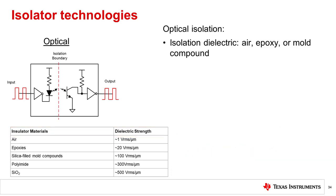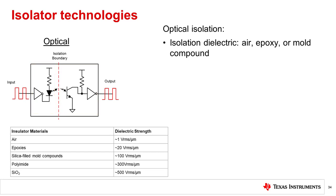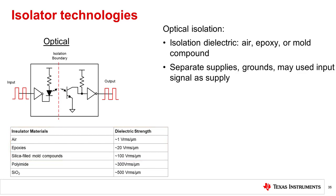An optical isolator, or optocoupler, consists of an input LED, a receiving photodetector, and an output driver. The driver circuit and LED circuits are typically built using complementary metal oxide semiconductor technology, or CMOS technology. The isolation barrier of the optocoupler is typically built using air, epoxy, or mold compound. Both the input and output of the optocoupler require a separate voltage supply, connected through anode and collector pins, and separate grounds, typically connected through a cathode or emitter pin, in order to maintain signal isolation between input and output.